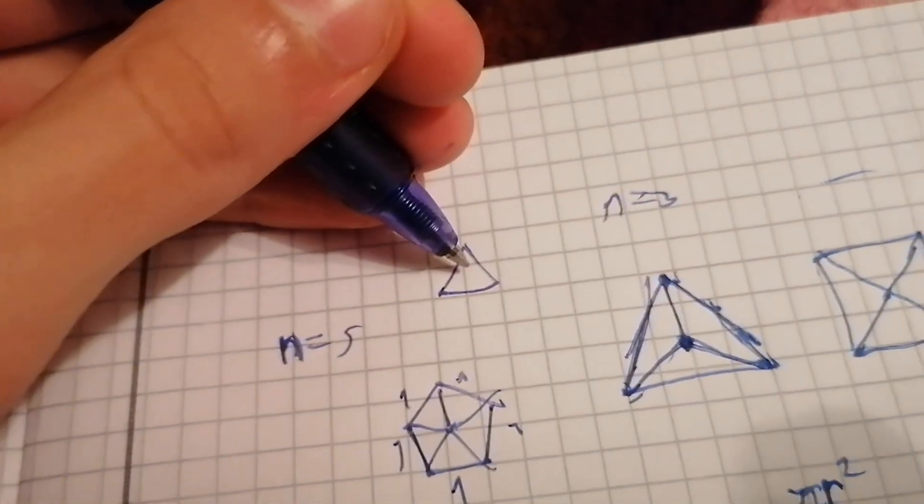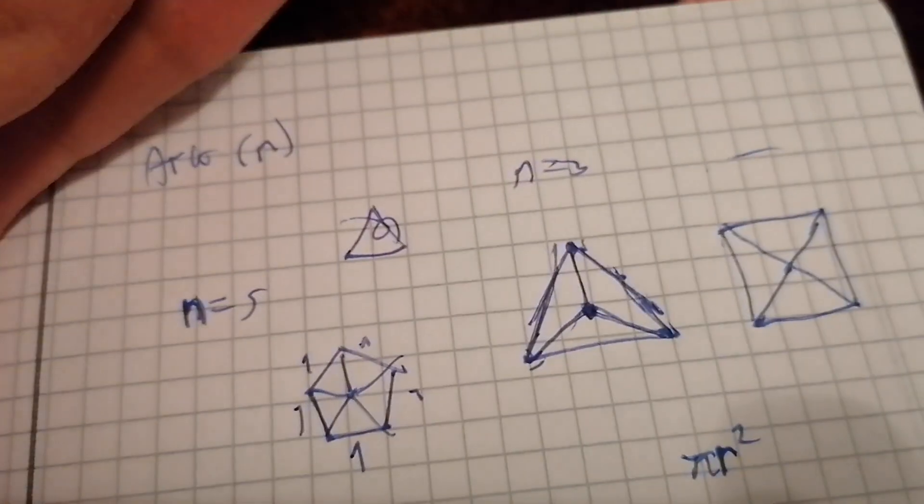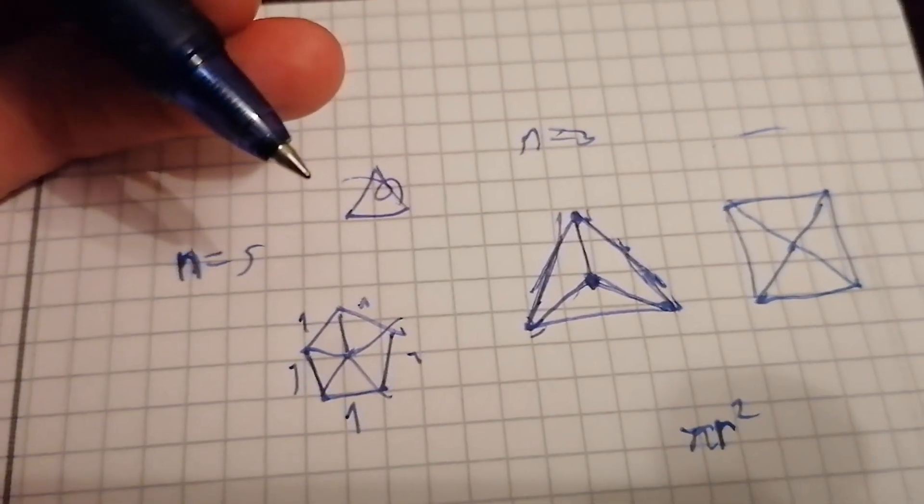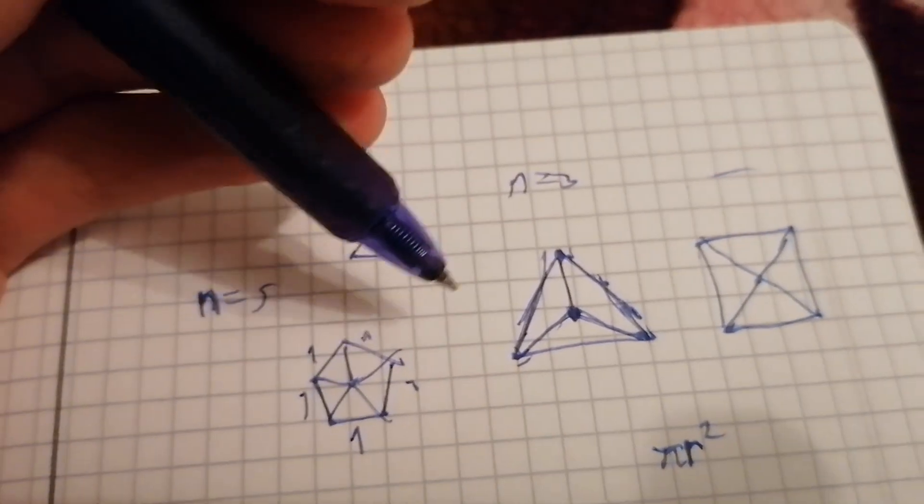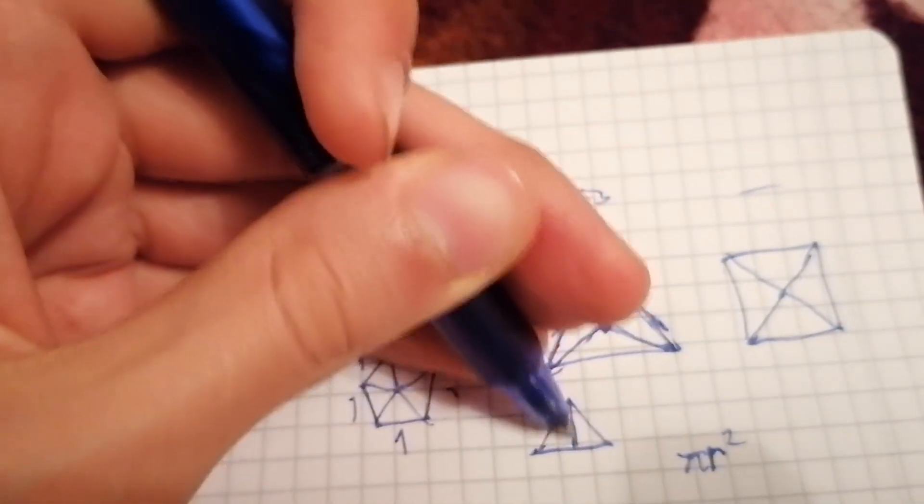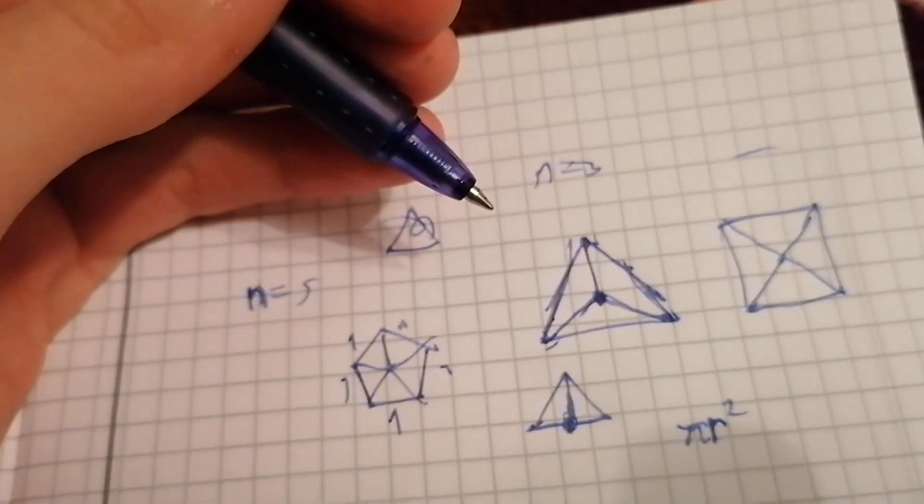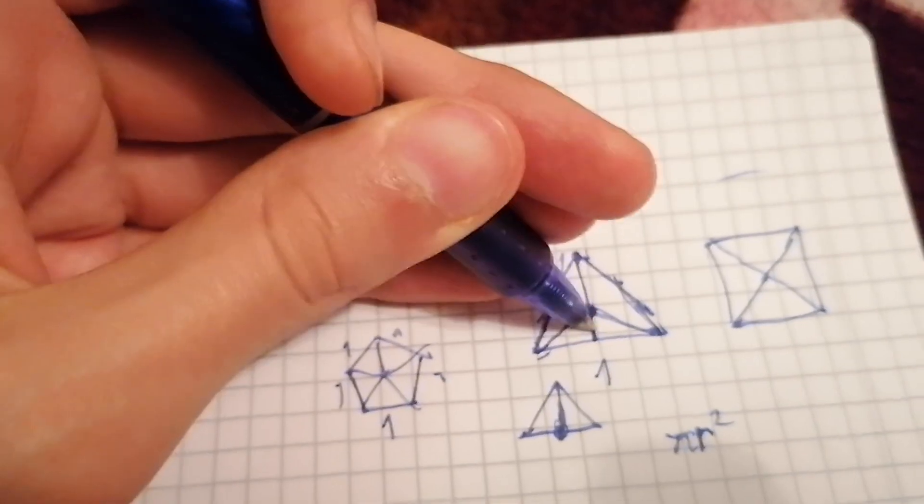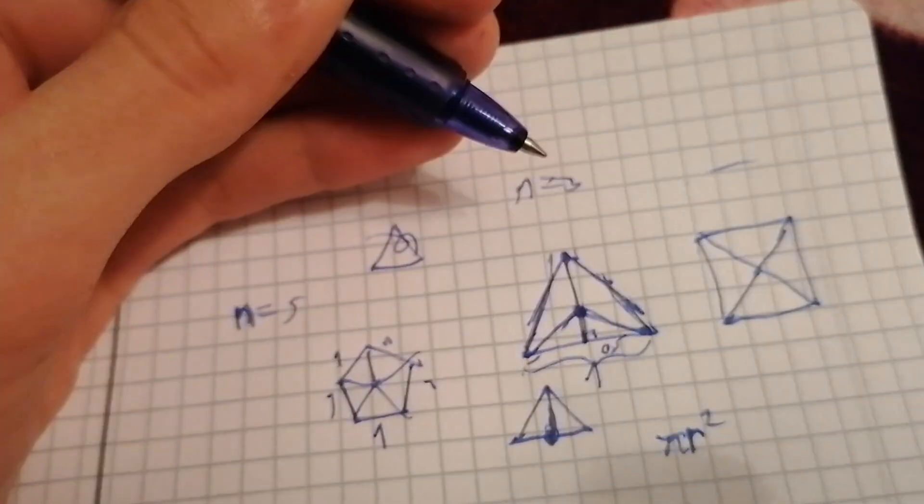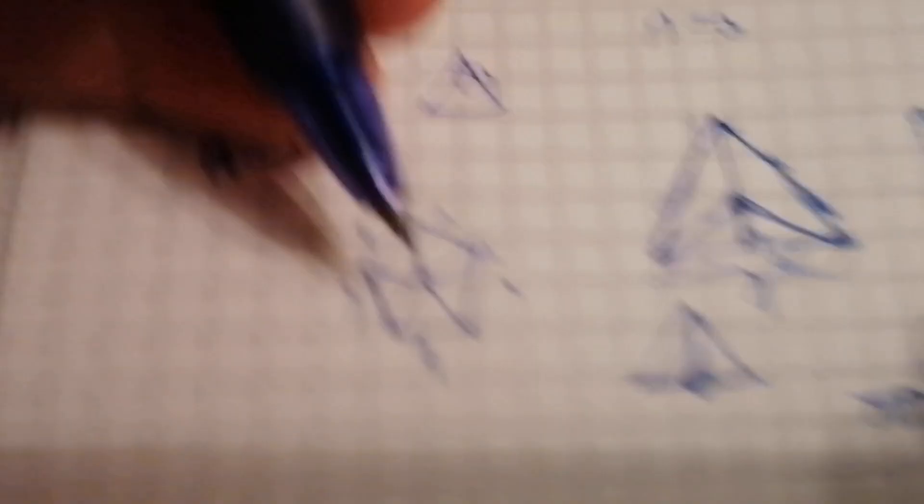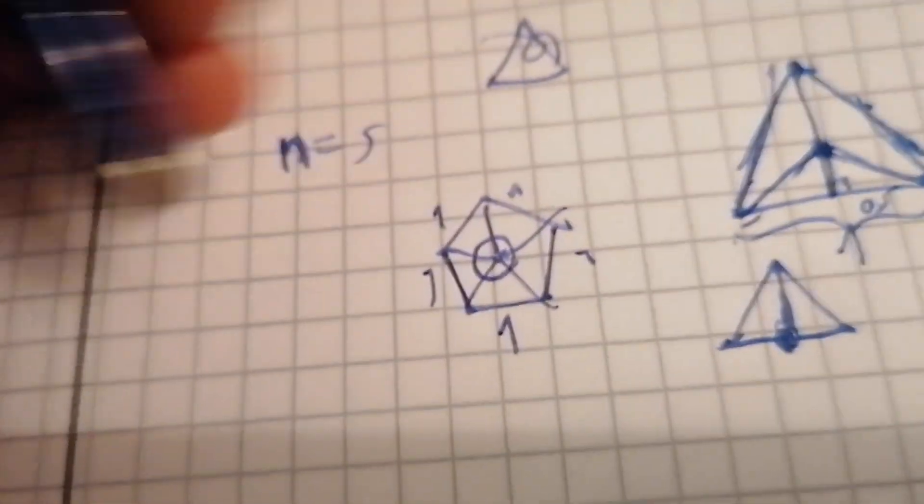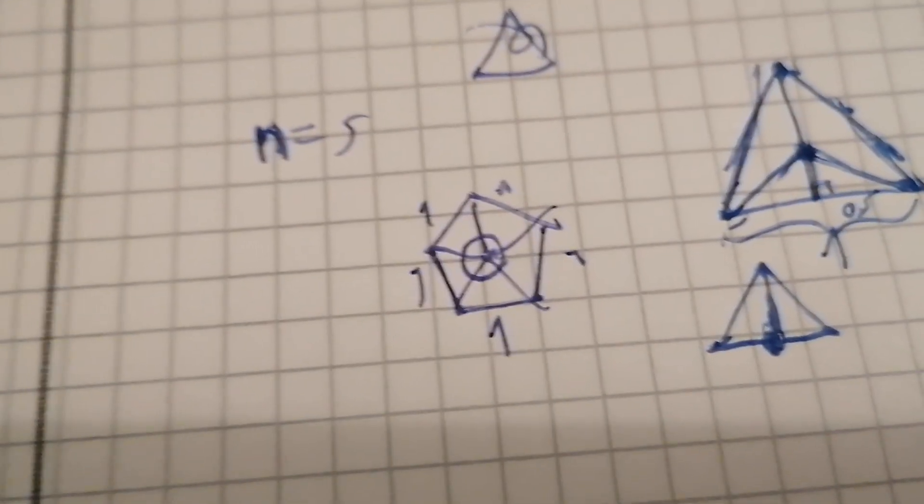And now we can try to calculate the area of one such triangle and just multiply it by the number of sides to get the whole area. How can we calculate the area of such triangle? It's really simple because it actually creates isosceles triangles, which have the property that their height lies exactly on the middle of that side. So, if we have side length 1 and we have this division, then the base of this right triangle is 0.5. So, if we are dividing in equal triangles like this, we are also dividing the 360 degrees into n equal angles.